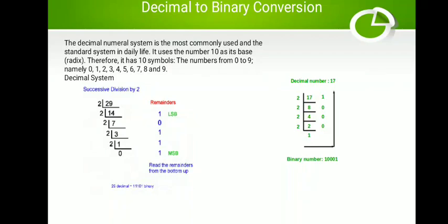When we represent this number, we take the remainders from bottom to top. The bottom remainder is the MSB and the top is the LSB. This is how you represent the binary number of the given decimal equivalent.